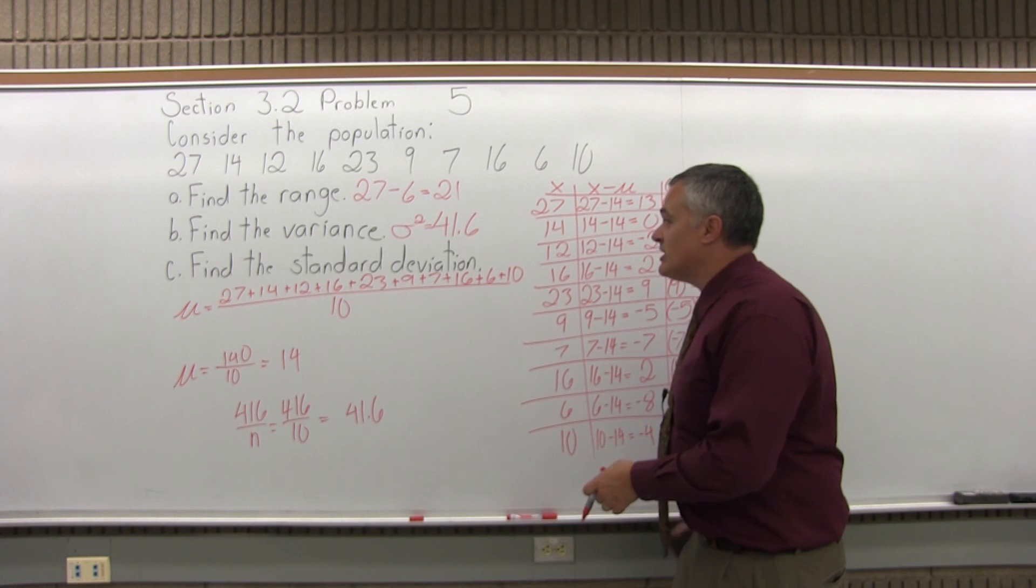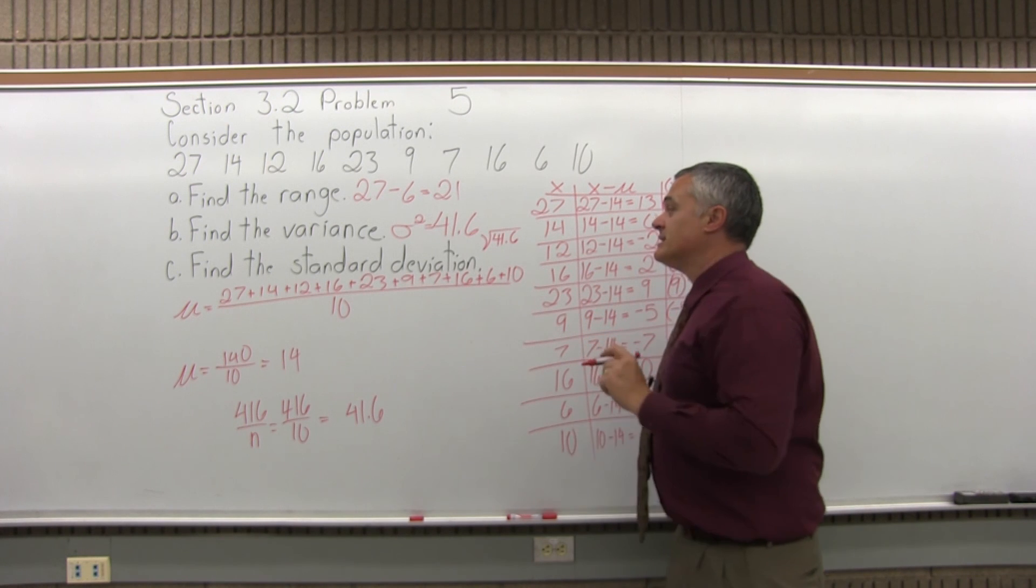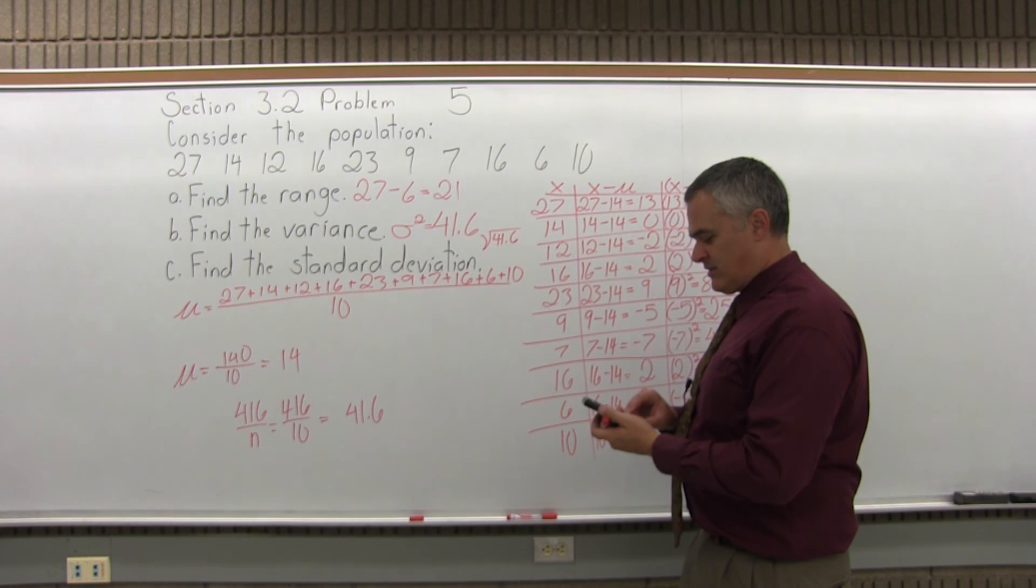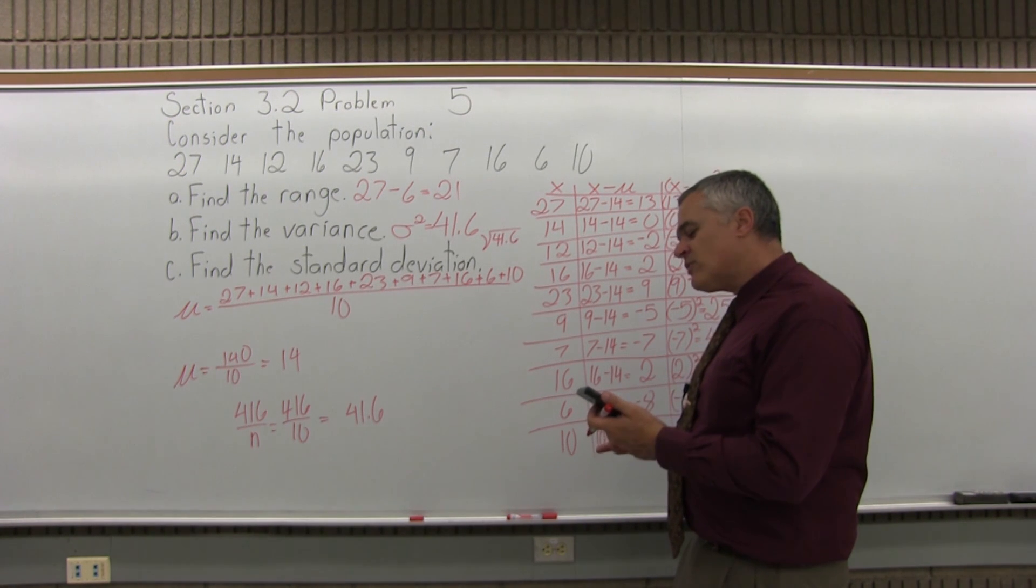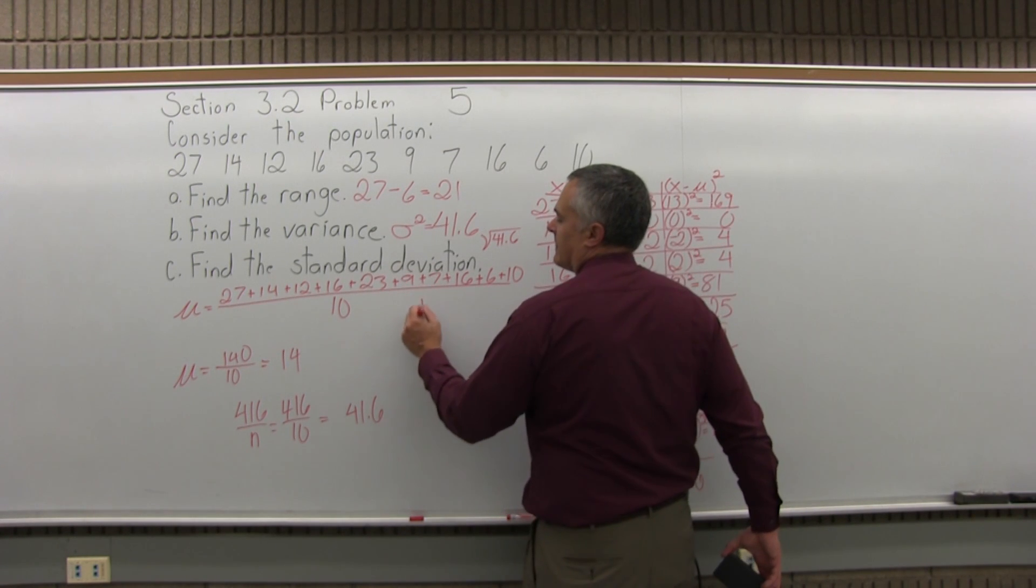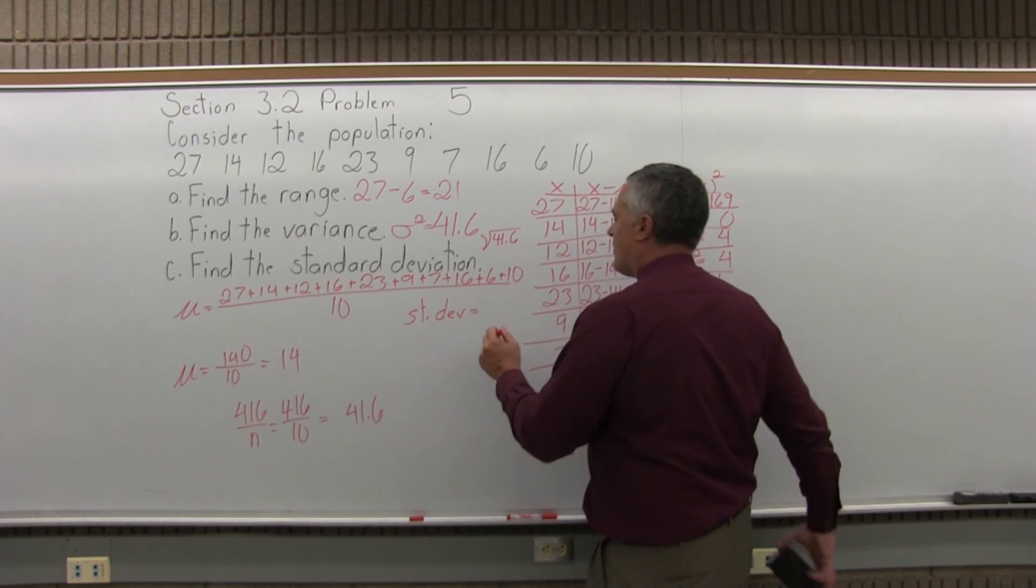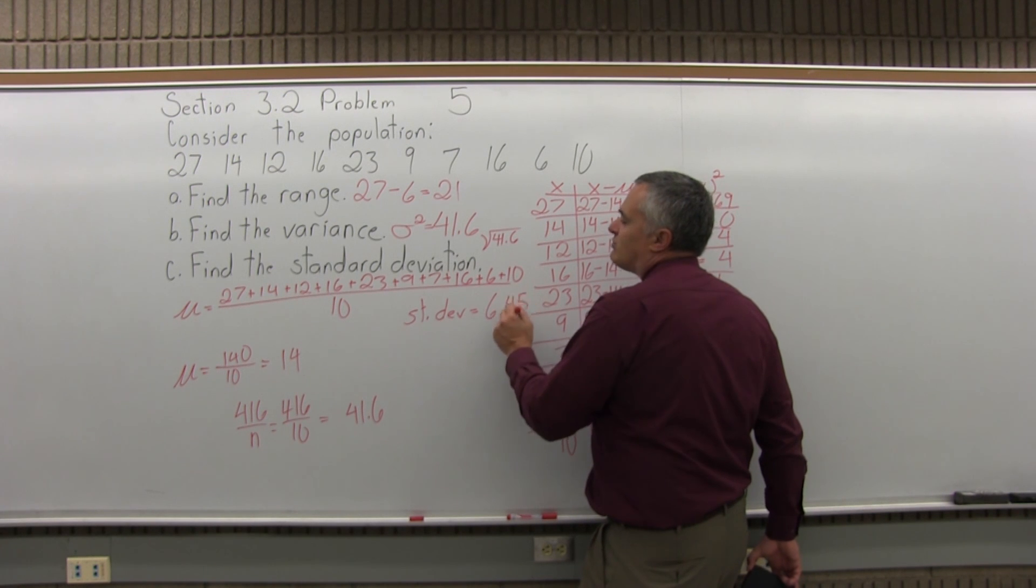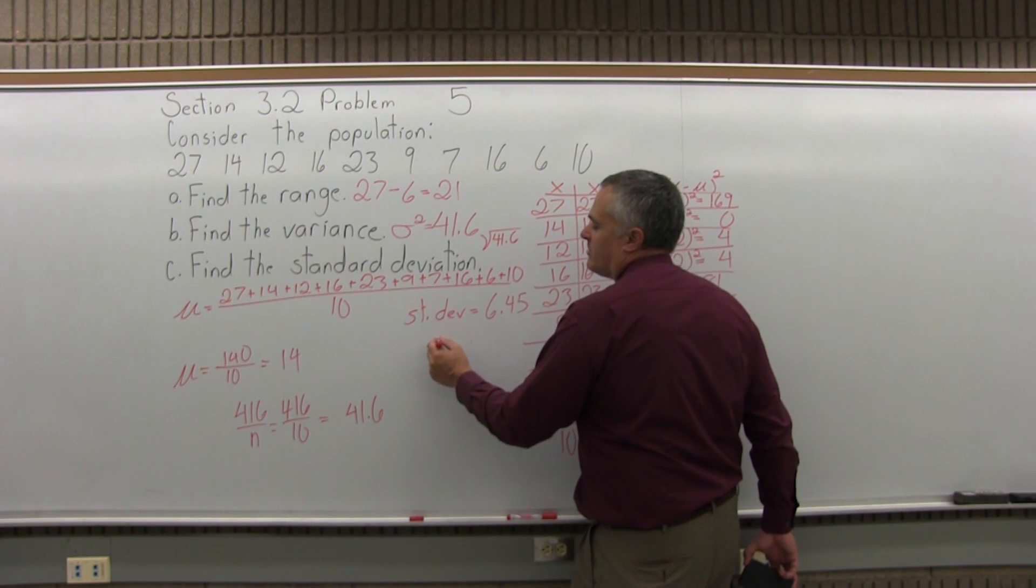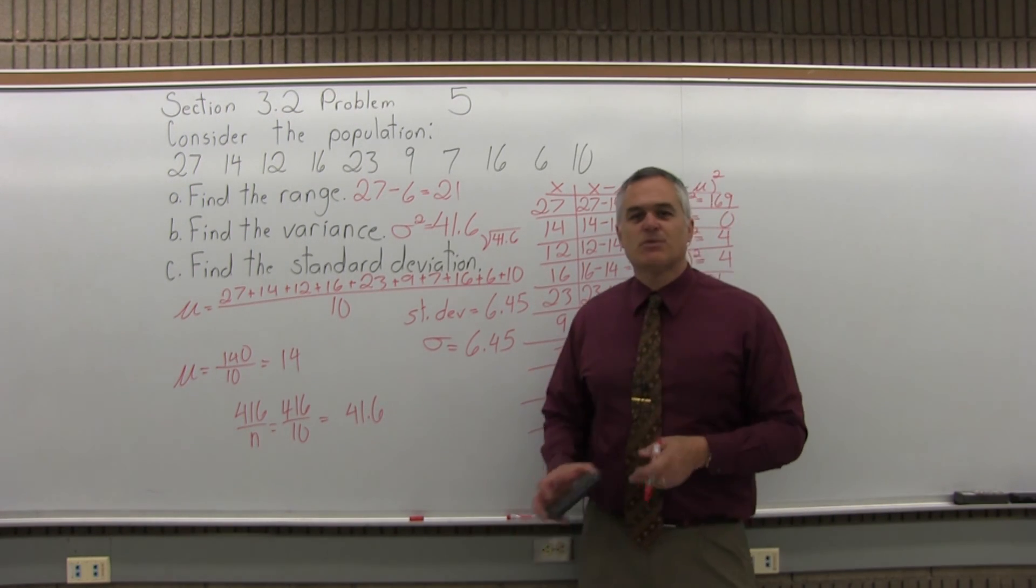And now, standard deviation will be square root of whatever the variance was. So, square root of 41.6, which I will use my calculator for, is 6.44980619. I'd like to round that off. So, standard deviation equals, within some round off, 6.45. And to use the proper symbol, it would be the lower case S from the Greek alphabet, which is sigma. The standard deviation of the population, sigma equals a little less than 6.5, so we have 6.45.